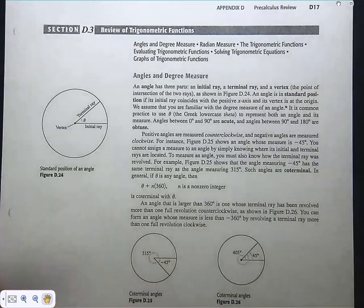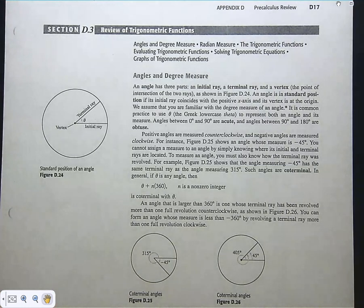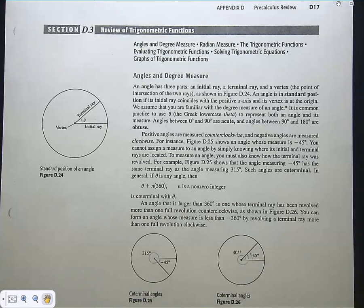All right. Review of trig functions — just the basics — and then we have two more days to talk about solving trigonometric equations and graphing trigonometric functions. We want to make sure you have that unit circle firmly on the back of your eyelids, so that when you close your eyes at night, you see the unit circle. This is just a review for you.